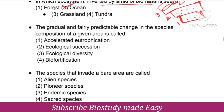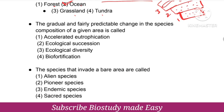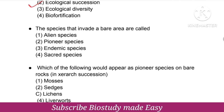The gradual and fairly predictable change in the species composition of a given area is called ecological succession. The species that invade a bare area are called pioneer species.